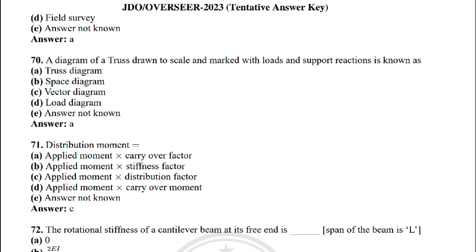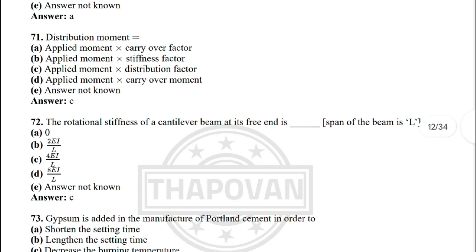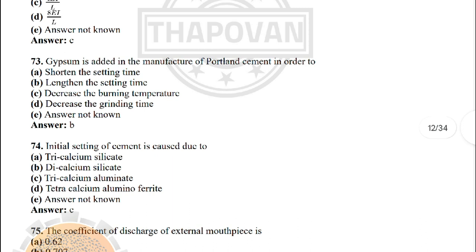Next: distribution moment — the correct answer is: applied moment × distribution factor. Next: the rotational stiffness of a cantilever beam at the free end for span of beam length L — the correct answer is option C: 4EI / L.